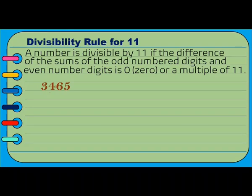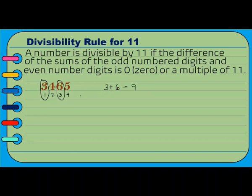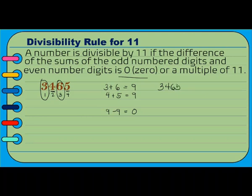Another example: we have 3,465, which has 4 digits. Let's get the sum of the odd-numbered digits: 3 plus 6 equals 9. Then, the sum of the even-numbered digits: 4 plus 5 equals 9. The difference of the sums is 9 minus 9, which equals 0. The difference is 0, so 3,465 is divisible by 11.